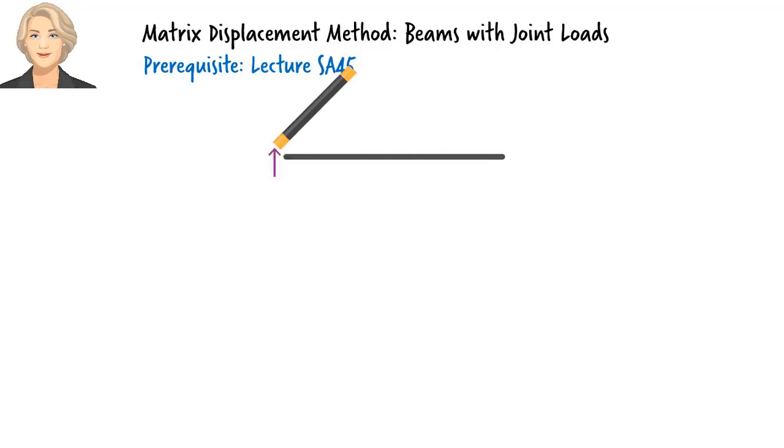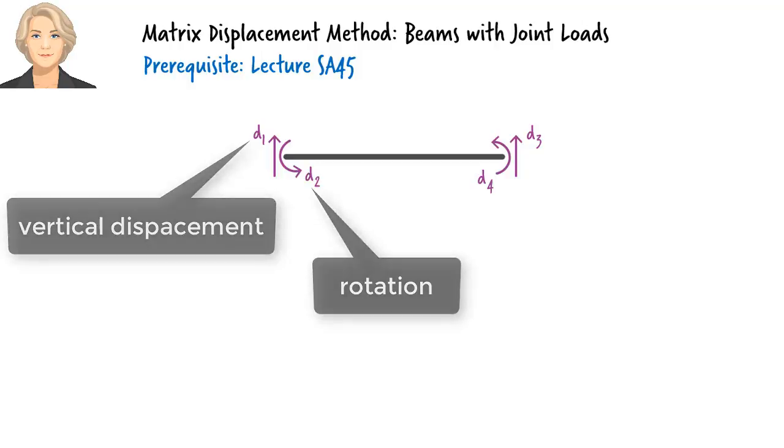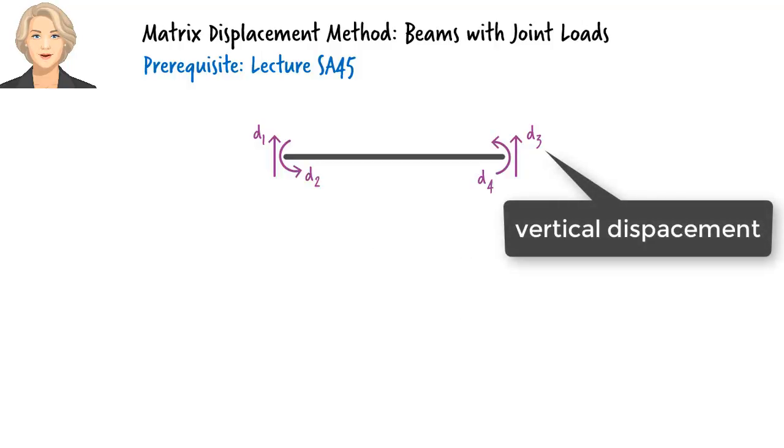Consider a beam segment. Ignoring axial displacement, we can say that the member has four degrees of freedom. Let's label them D1 through D4. D1 is vertical displacement and D2 is rotation at the left end of the member. D3 is vertical displacement and D4 is rotation at the right end of the member.